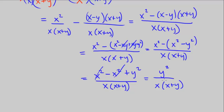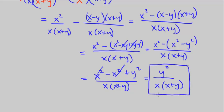We have y squared in the numerator and x times x plus y in the denominator — we can't simplify this any further. If we distributed the x we'd have y squared over x squared plus xy, but the factored form y squared over x times x plus y is cleaner and more simplified. That concludes CPM Pre-Calculus, Chapter 3, Number 62.